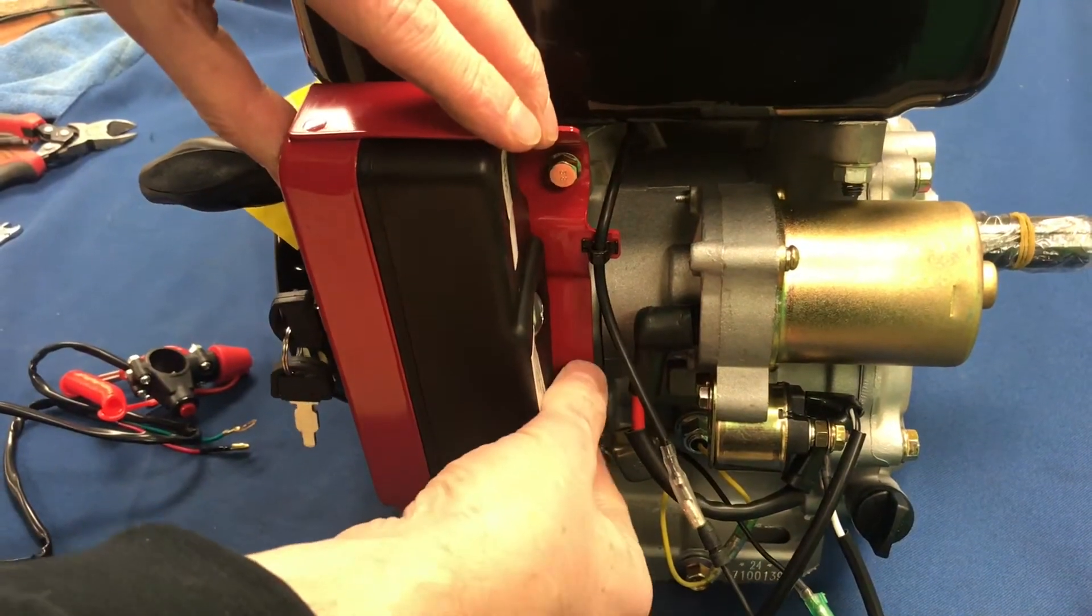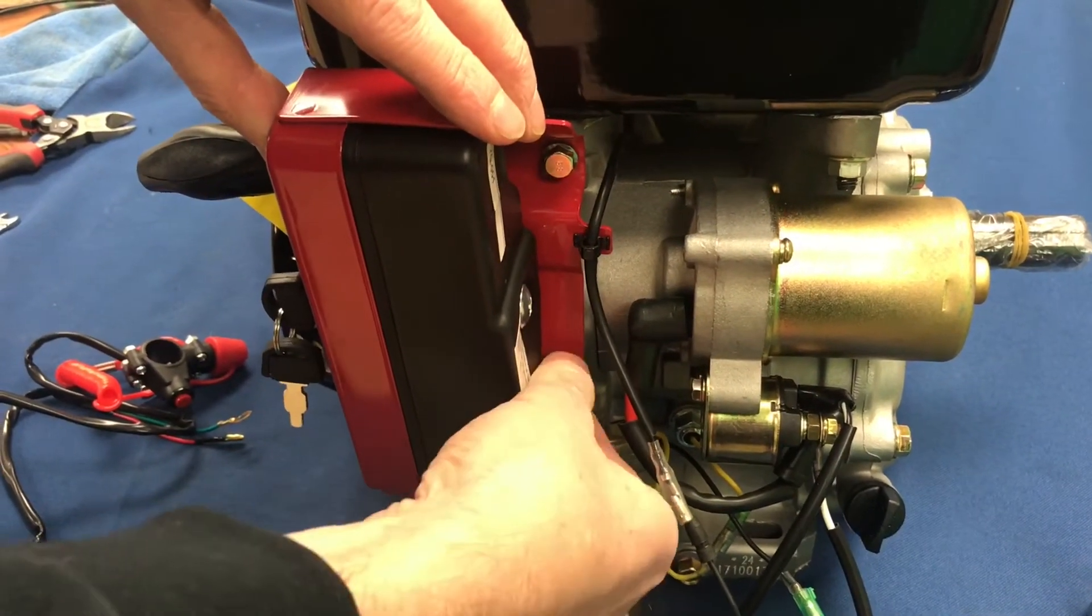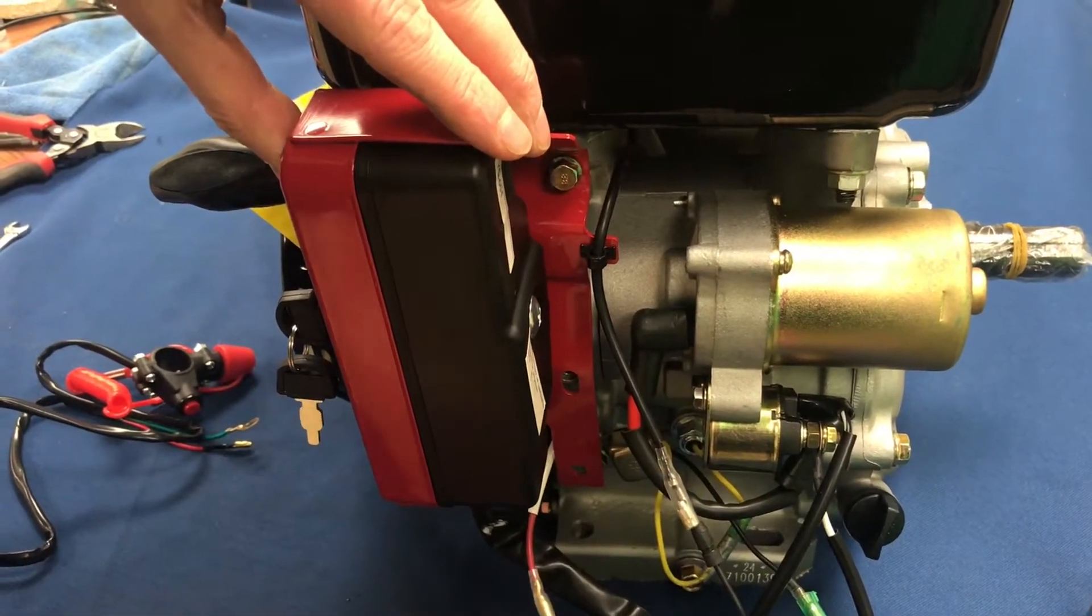The first thing we want to do is remove the lower bolt on the key ignition and put that to one side.